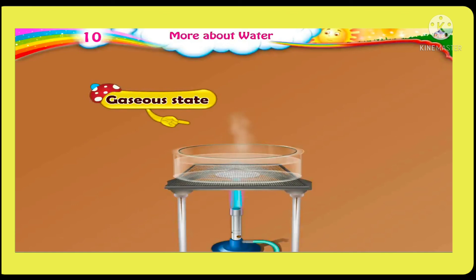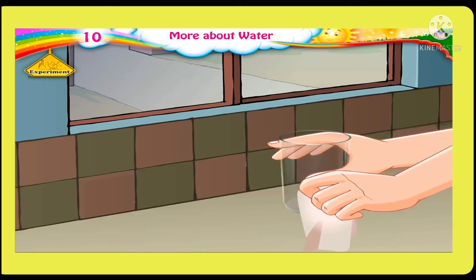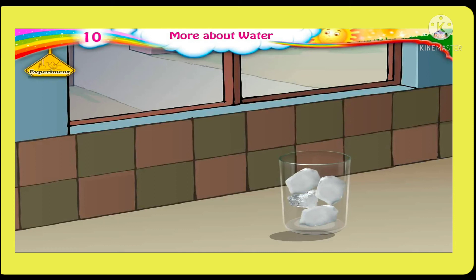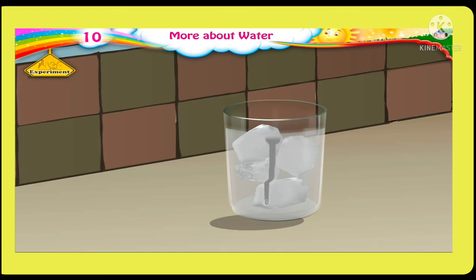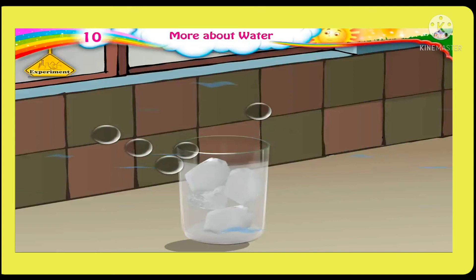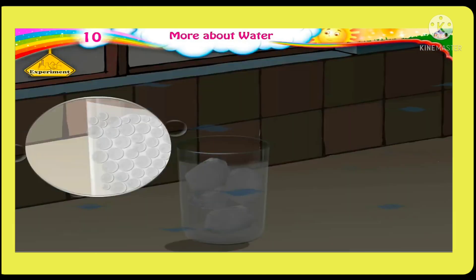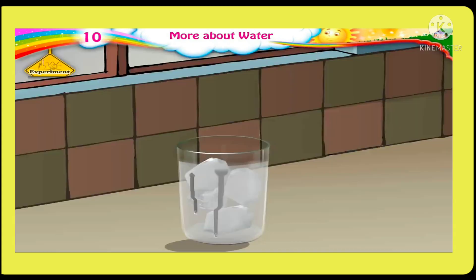Now we will do another experiment. Dry a glass inside and out using a clean cloth. Add 5 to 6 ice cubes in it. After some time, we see that the outer surface of the glass has become moist. How does this happen? There was water vapour in the air around the glass. When we added ice cubes, the surrounding area and glass cool down, causing the water vapour to form small droplets on the outside of the glass.